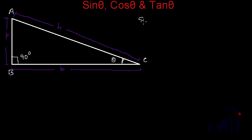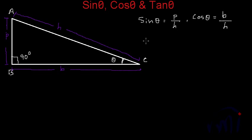Sin theta is defined as perpendicular by hypotenuse, and cos theta is defined as base by hypotenuse. The ratio of perpendicular to hypotenuse is called sin theta and the ratio of base to hypotenuse is called cos theta. And tan theta is defined as the ratio between the perpendicular and the base — the ratio of perpendicular to base is defined as tan theta.